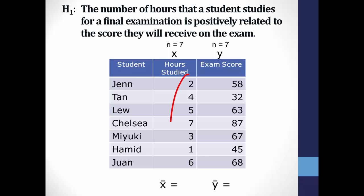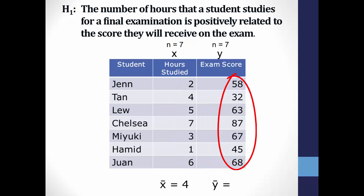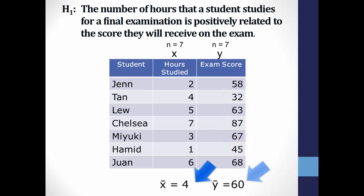You can calculate the mean for each set of numbers. For hours studied: 2 + 4 + 5 + 7 + 3 + 1 + 6 equals 28, divided by 7 (the n for the x variable), equals 4. Do the same thing for exam scores, the y variable, and you'll come up with 60 as the mean. So the mean of x is 4 and the mean of y is 60. Now we have all we need to start doing our calculations.